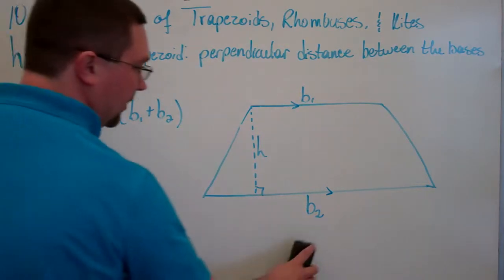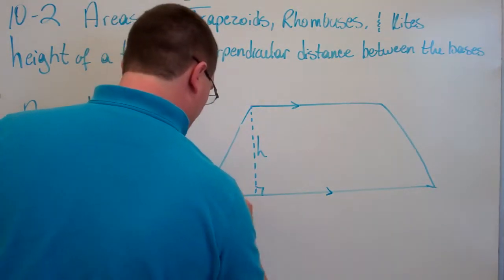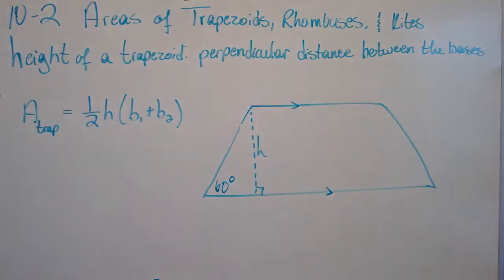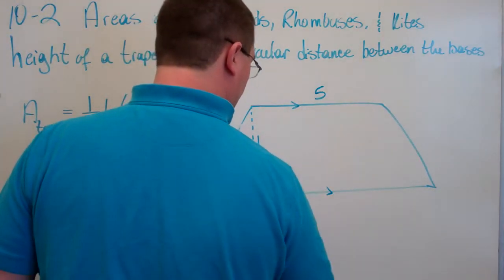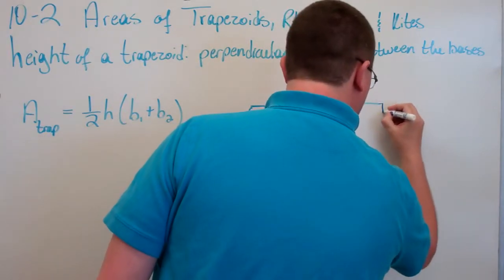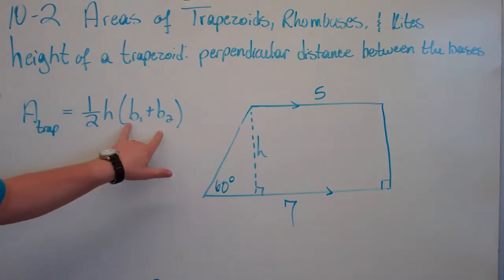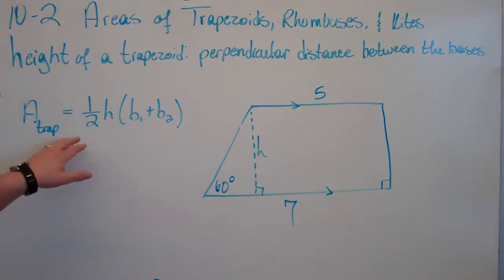Let's work a problem. We know this is a 60-degree angle, this side is 5, and this side is 7. To find the area of the trapezoid, the first thing we need to do is find the height. We know the sum of the two bases is 5 plus 7, which is 12. Half of that is 6, so now we just need to find the height, and it's simply 6 times the height.